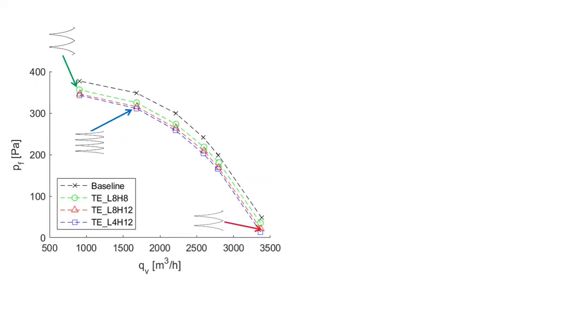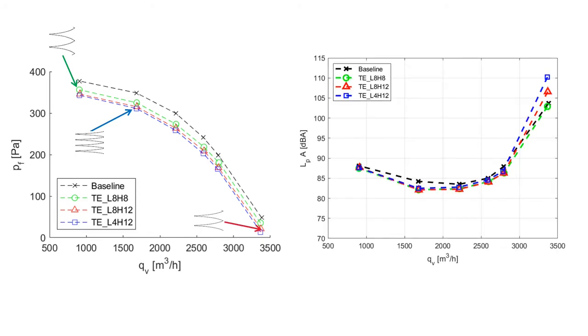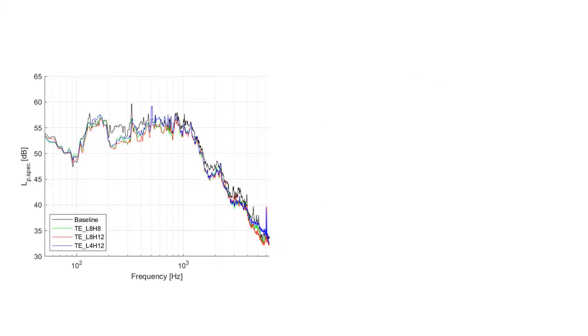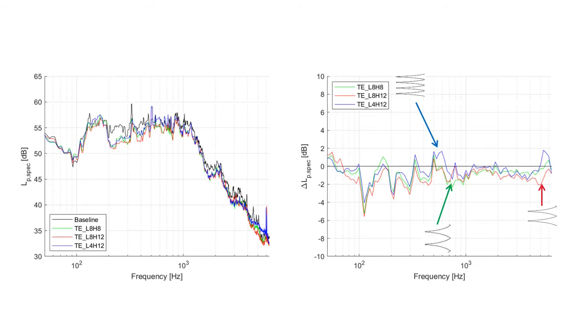Okay, let's move to trailing edge serrations. If we look at the fan curve, there's a pressure drop for all operating points. If we look at the specific noise, which accounts for these pressure losses, trailing edge serrations achieve a slight noise reduction. If we take a look at the noise spectra, this noise reduction is broadband. This is for all frequencies.